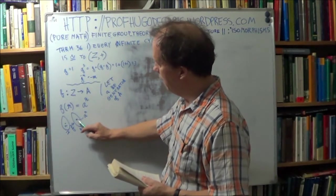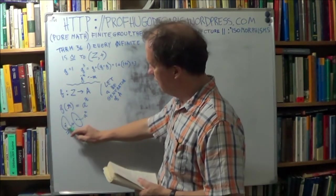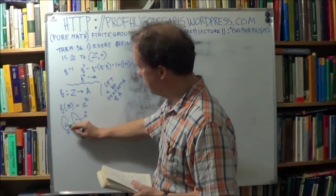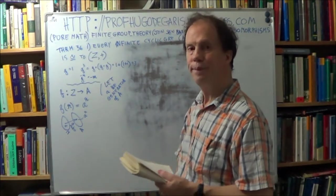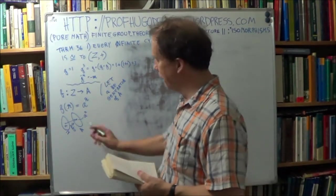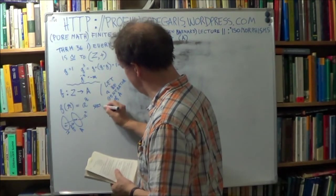Okay? So every element in your codomain, your set A, gets mapped to. This R here maps to that one. For all R. Okay? So surjective, surjective.